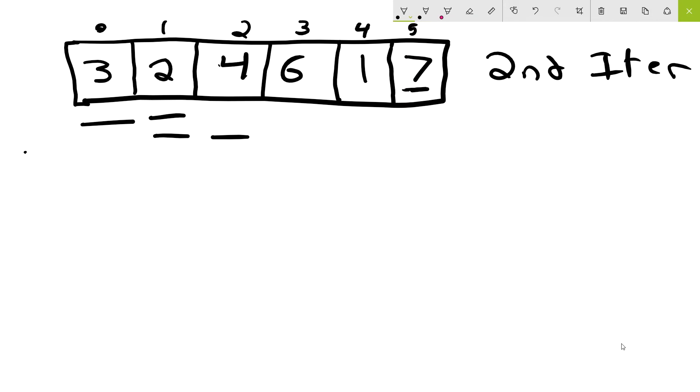Now we have 2 and 4. Next, we look at the 2nd and 3rd indexes, the 4 and 6. They're in order, so we're good. We look at the 6 and the 1, and they are out of order. So we want to swap them. So we now have 1 and 6 here. Well, we got the 6 where we wanted it, so we can continue this process.